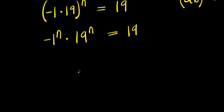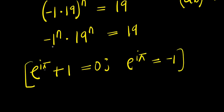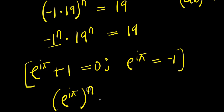Now, let's consider this identity: if you have e to the power of i times pi, plus 1, this equals 0, meaning e^(iπ) equals negative 1. We have negative 1 here, so we substitute: e^(iπ) raised to the power of n, times 19 raised to the power of n, equals 19.